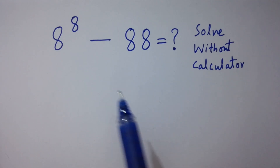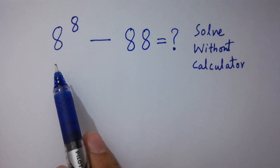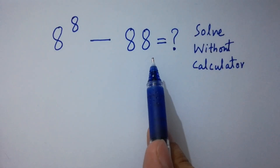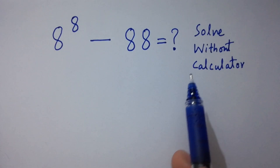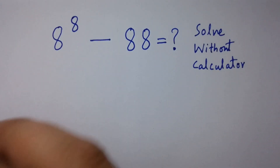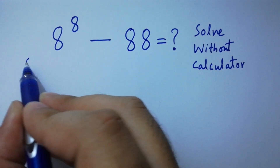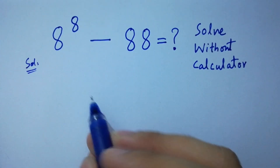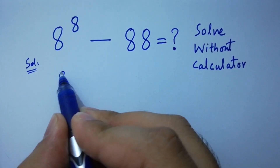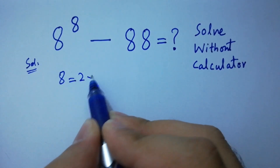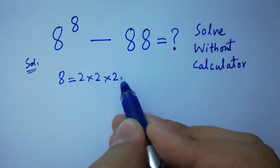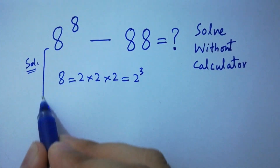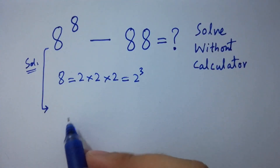Hello friends. 8 to the power 8 minus 88 equals what? Let's solve it without a calculator. Since 8 equals 2 times 2 is 4, times 2 is 8, which equals 2 cubed.